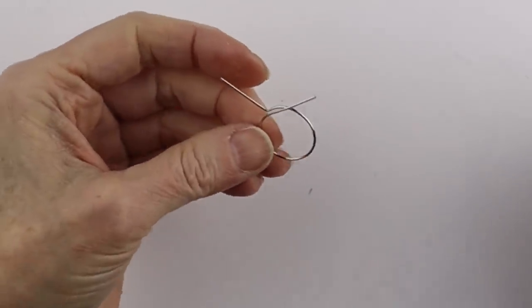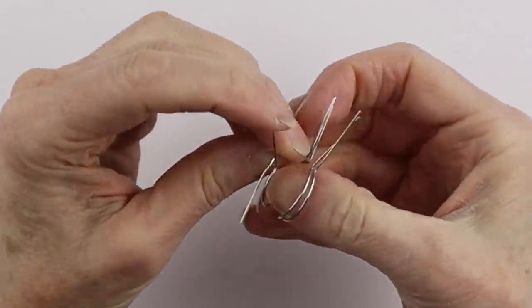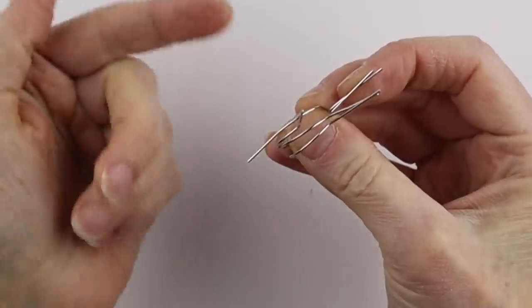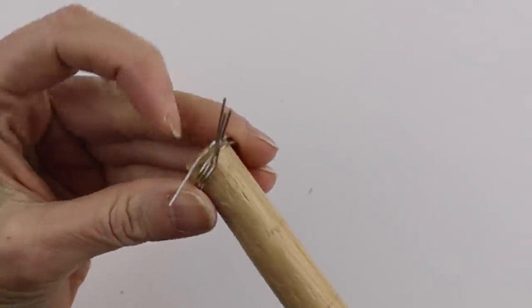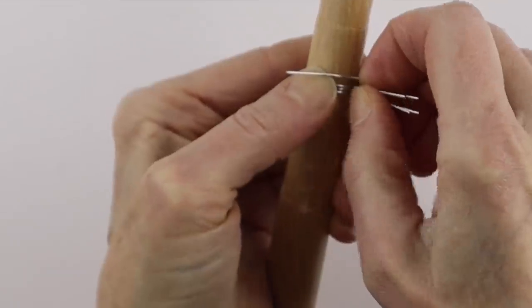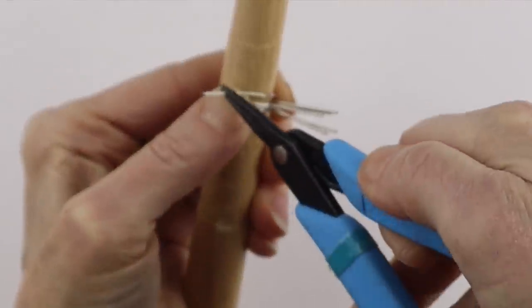Now we're going to line these all up. Make sure the one that's horizontal is on the outside, put these together, put it back on your ring cone, make sure they're all lined up.